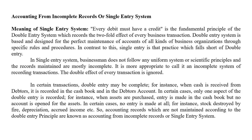For example, cash is received from a debtor, so it is recorded in the cash book as well as the debtor's account — both cash book and debtor account. In certain cases, only one aspect of the double entry is recorded. For instance, when assets are purchased, an entry is made in the cash book but the asset account is not opened in the single entry system.